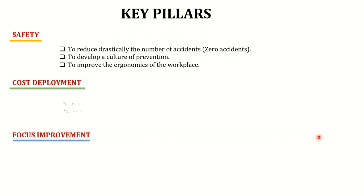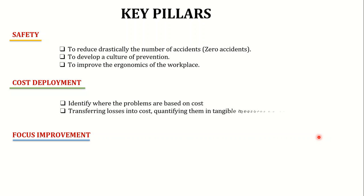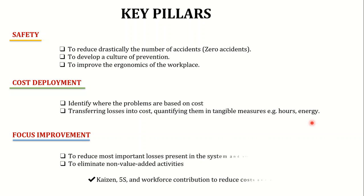The second pillar is Cost Deployment. Every problem in our system has a cost. We want to identify those problems and quantify their effect in tangible measures such as hours and energy. For example, if a machine becomes faulty and the production process is affected, we measure how many hours the machine was stopped and how much energy was consumed inefficiently.